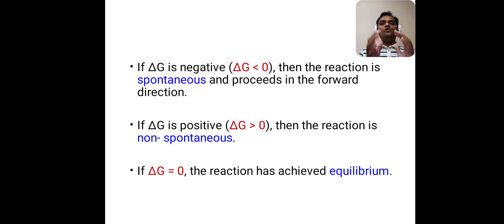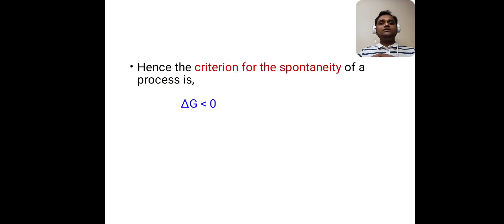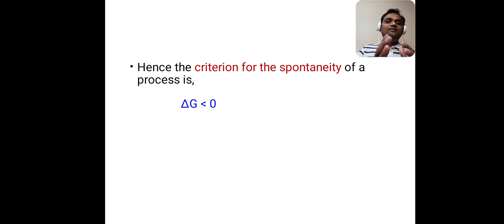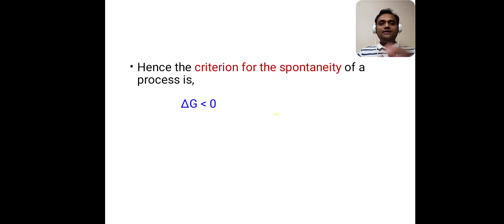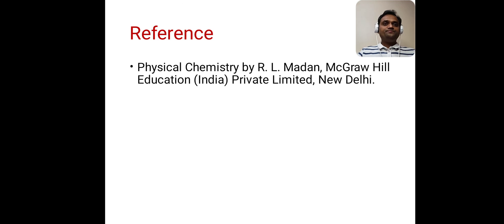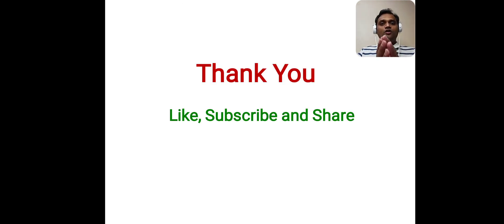The value of delta G gives us the criteria for spontaneity — whether our reaction is spontaneous or non-spontaneous. This is important for multiple choice questions: when delta G is less than zero, the reaction is spontaneous. This concludes the introduction to Gibbs Energy, also called Free Energy or Gibbs Free Energy. Thank you for watching.